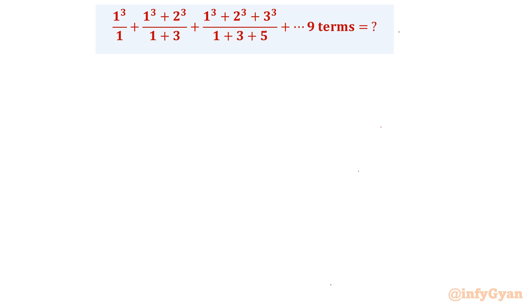I will begin this problem by writing the general term. So let me write general term Tn as 1 cubed plus 2 cubed plus 3 cubed up to n terms over the denominator 1 plus 3 plus 5 plus up to n terms. We have to find the sum for 9 terms only. So first we will find out Tn then we will go for sum.